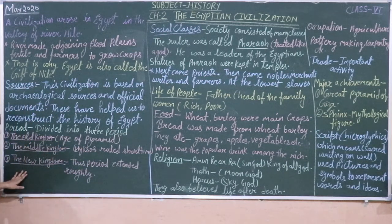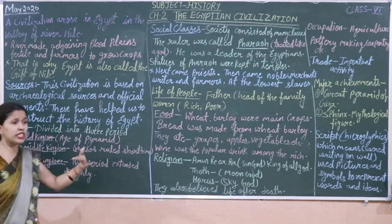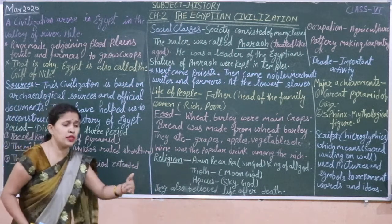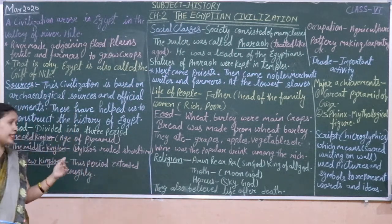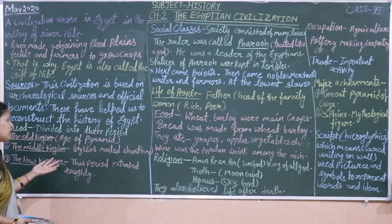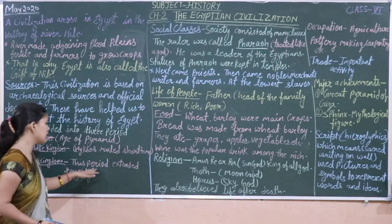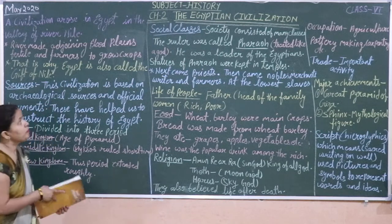This is the New Kingdom, which developed civilization slowly and slowly and has become quite a lot of civilization. Egyptian civilization within this period of time was free.